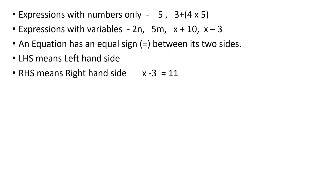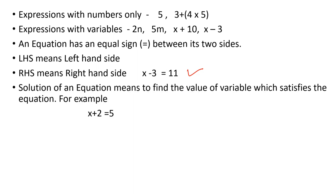An equation has an equal sign between its two sides. LHS means left hand side and RHS means right hand side. For example, this is an equation — it has an equal sign. X minus 3 is the left hand side of the equation and 11 is the right hand side.